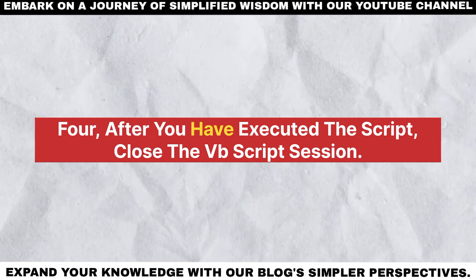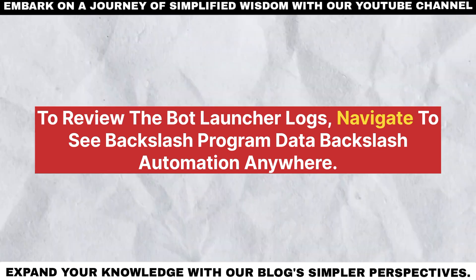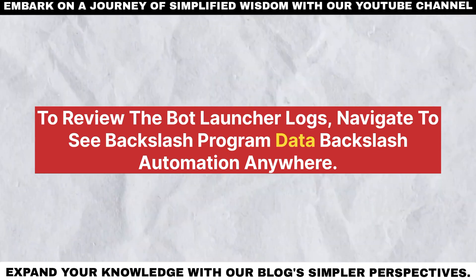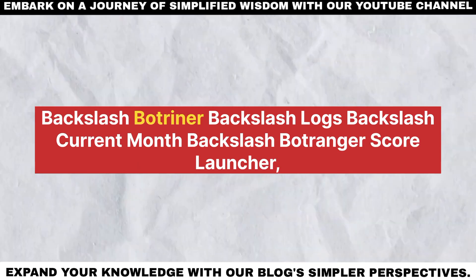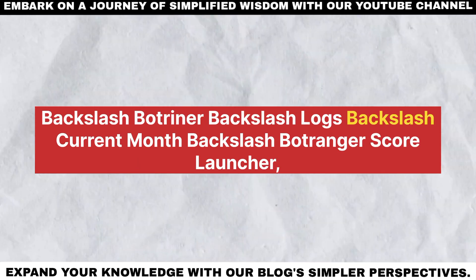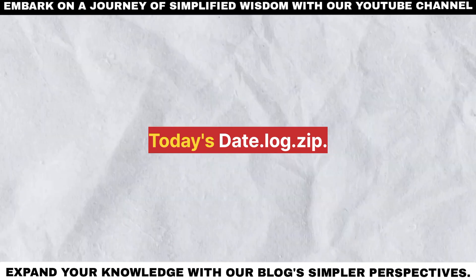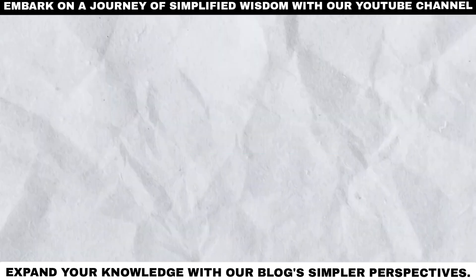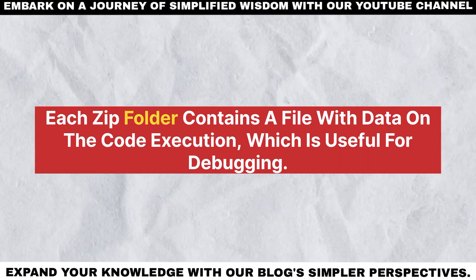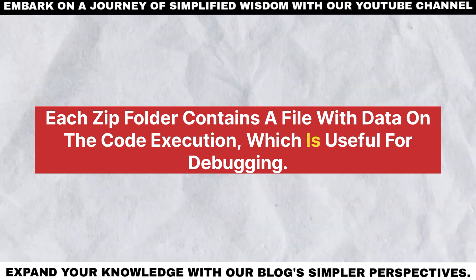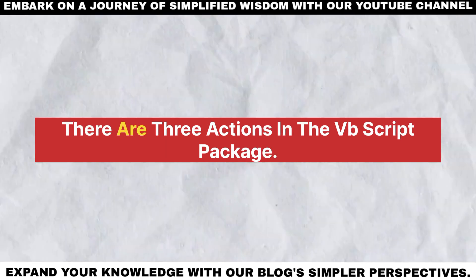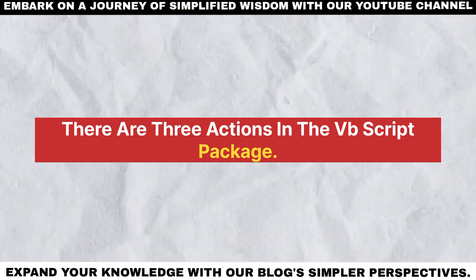You must use the VBScript session name you established in the previous step. Fourth, after you have executed the script, close the VBScript session. Fifth, to review the bot launcher logs, navigate to C:\ProgramData\AutomationAnywhere\BotRunner\logs\current month\bot_launcher_today's date.log.zip. Each zipped folder contains a file with data on the code execution, which is useful for debugging. There are three actions in the VBScript package.